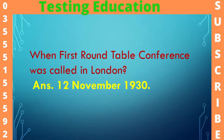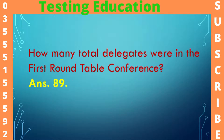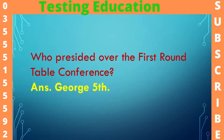When was the First Round Table Conference called in London? 12th November 1930. How many total delegates were in the First Round Table Conference? 89. Who presided over the First Round Table Conference? George V.